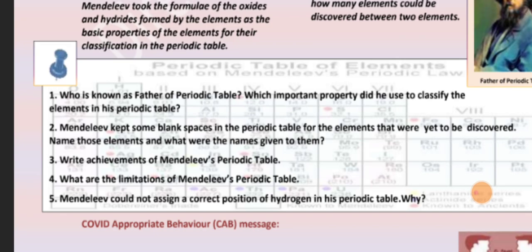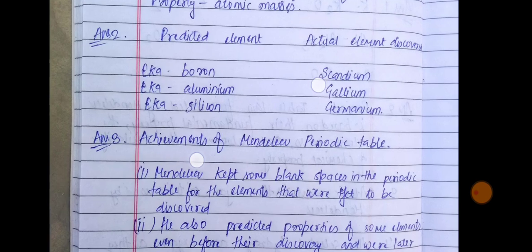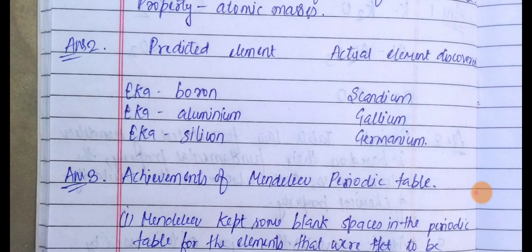Mendeleev kept some blanks in the periodic table for elements that were yet to be discovered. Name those elements and what names were given to them. Predicted elements were Eka-boron, Eka-aluminium, and Eka-silicon. The actual elements discovered were Scandium, Gallium, and Germanium.